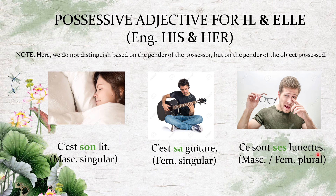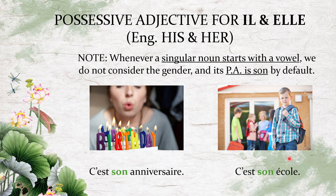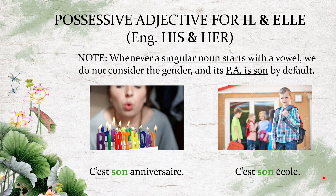For plural: 'ce sont ses lunettes' — these are his or her glasses. From the picture you can understand they are his glasses, but 'ses' has nothing to do with the possessor's gender — it is about the object being plural. The same vowel rule applies here too: when a singular noun starts with a vowel, use 'son.' For example, 'c'est son anniversaire' — it's his or her birthday — because 'anniversaire' is singular starting with a vowel. 'C'est son école' — it's his or her school — because 'école' starts with a vowel.